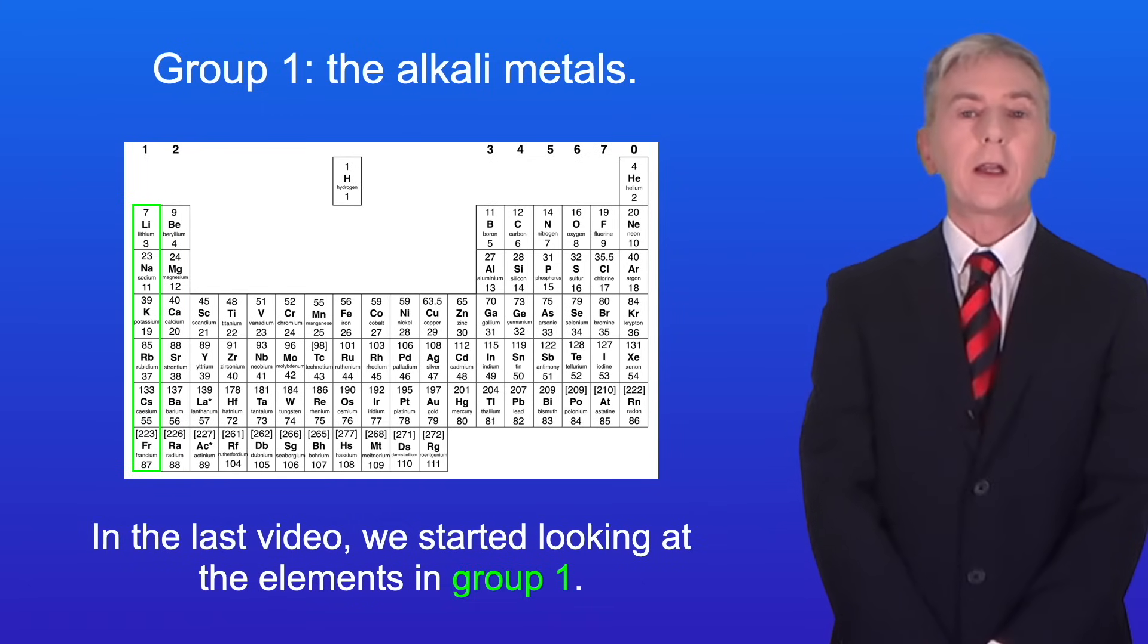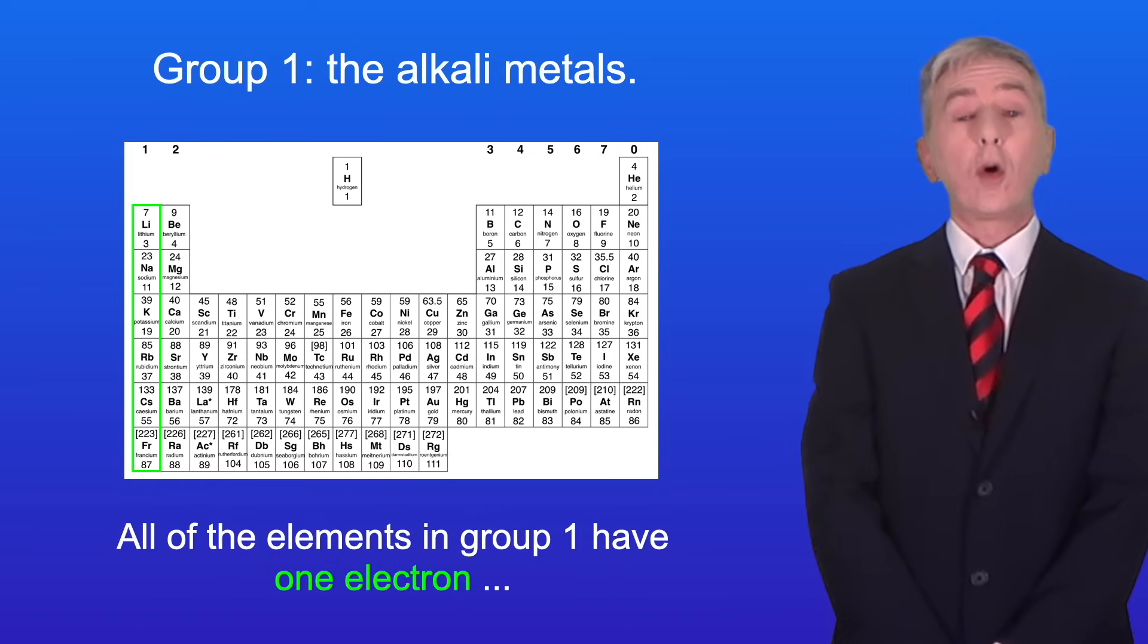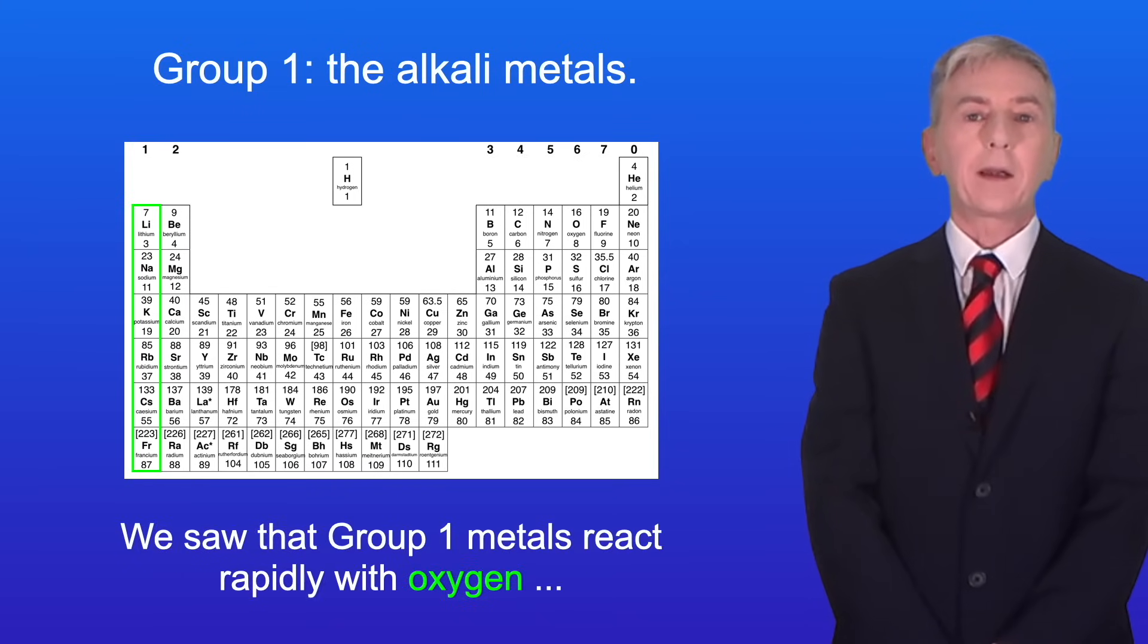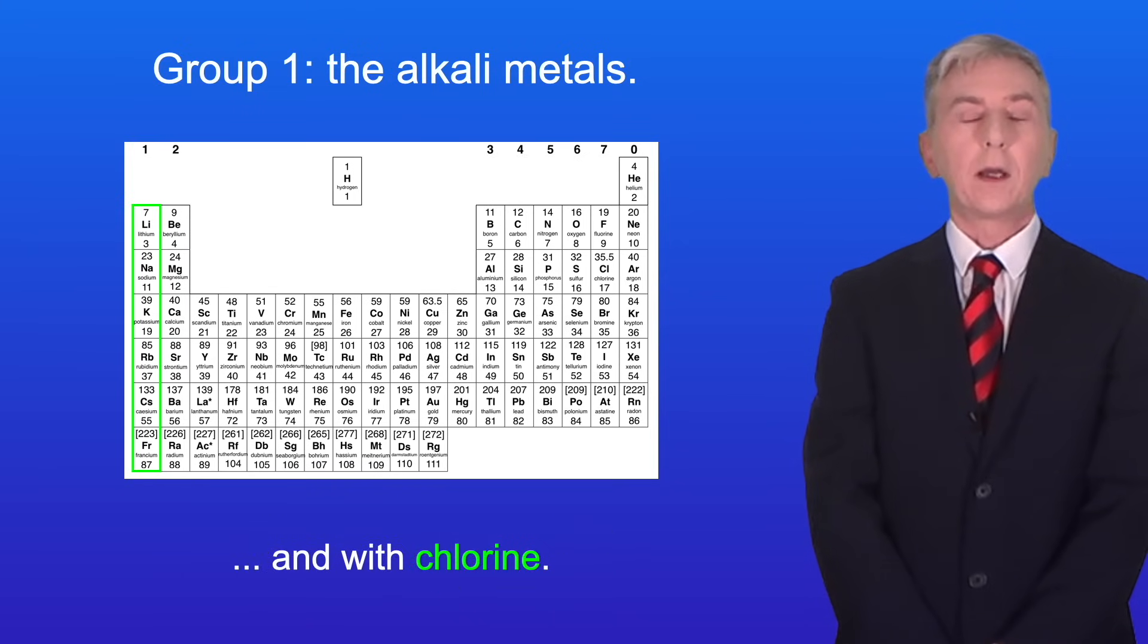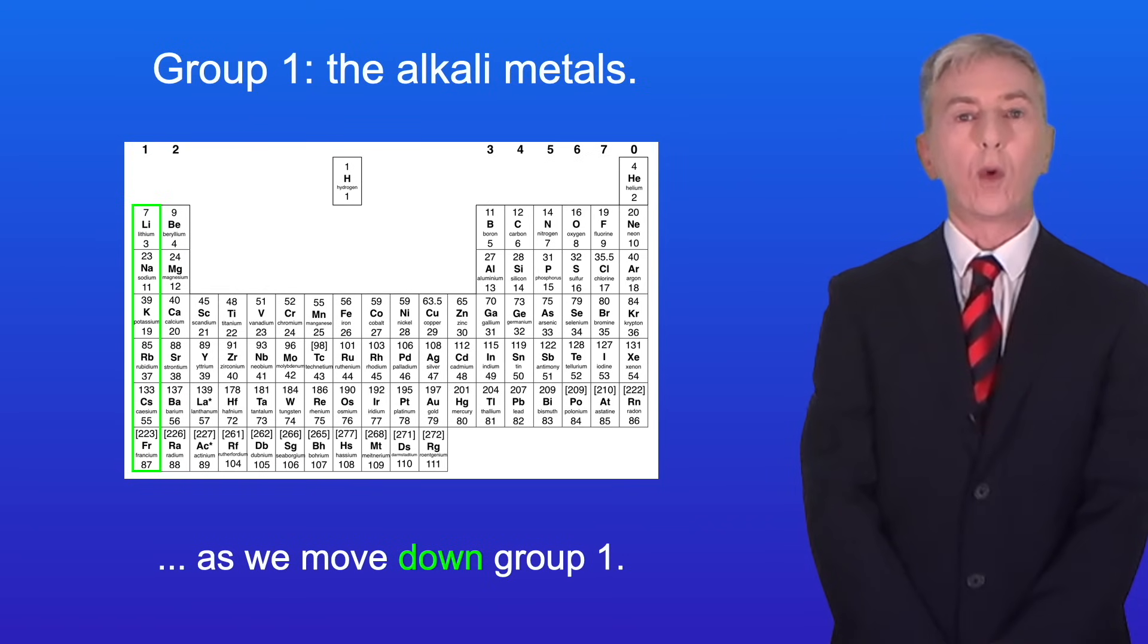In the last video we started looking at the elements in group 1. Remember that the group 1 elements are called the alkali metals and all of the elements in group 1 have one electron in their outer energy level. We saw that group 1 metals react rapidly with oxygen and with chlorine. We also saw that group 1 metals get more reactive as we move down group 1.